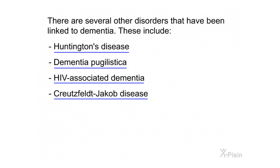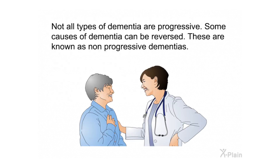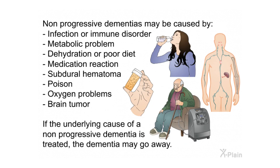Several other disorders have been linked to dementia, including Huntington's disease, dementia pugilistica, HIV-associated dementia, and Creutzfeldt-Jakob disease. Not all types of dementia are progressive. Some causes of dementia can be reversed; these are known as non-progressive dementias. Non-progressive dementias may be caused by infection or immune disorder, metabolic problems, dehydration or poor diet, medication reaction, subdural hematoma, poison, oxygen problems, or brain tumor. If the underlying cause is treated, the dementia may go away.